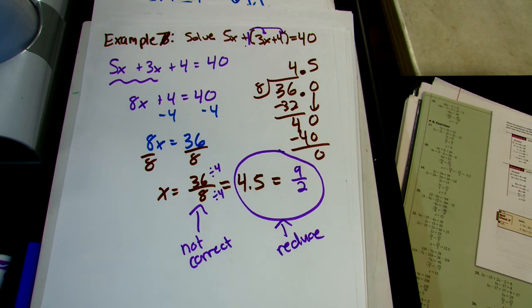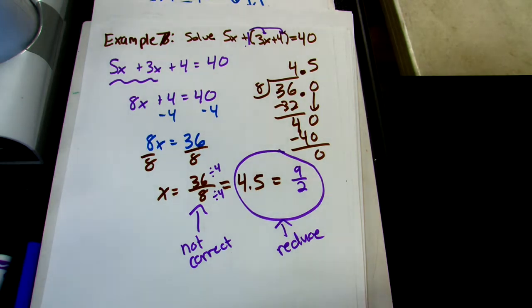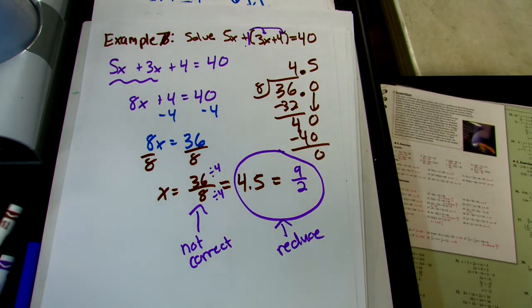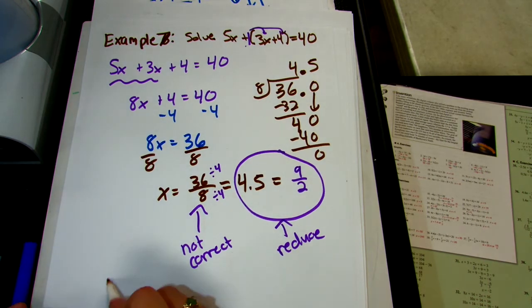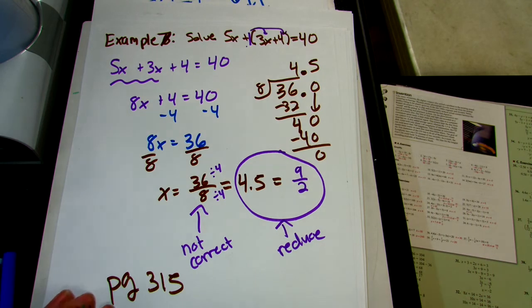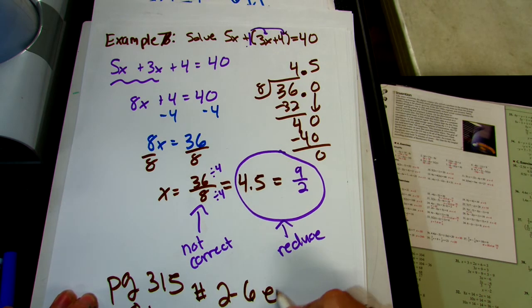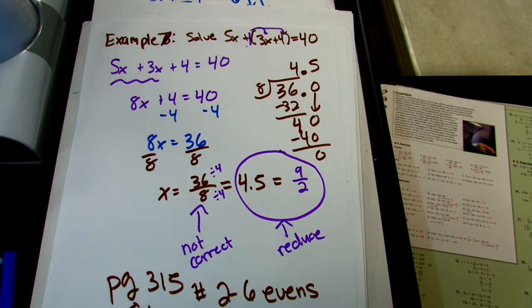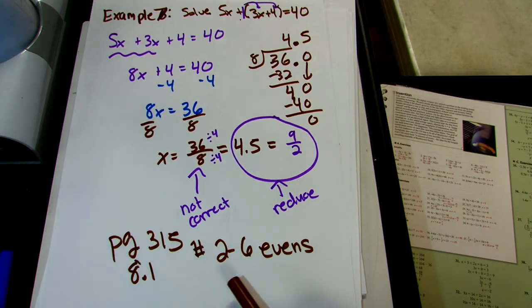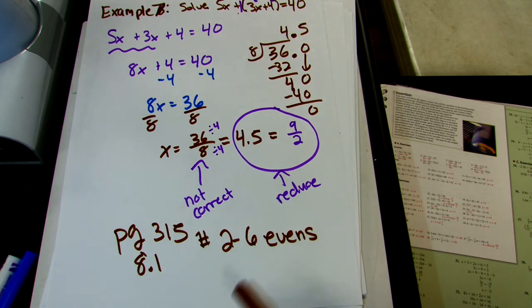That's all I have to say about simplifying equations. I hope that this refreshed your memory and covered some things you might have been struggling on. I will see you in class where we do some practice problems. On top of doing your notes for this lesson, I want you to go to page 315 — this is section 8.1 in your book — and do problems 2 through 6, evens. If you're struggling, contact me and I'll help you through it. I hope you all have a wonderful evening.